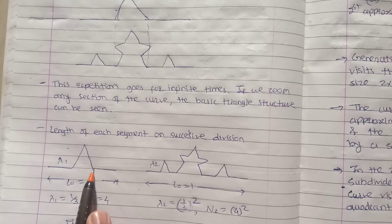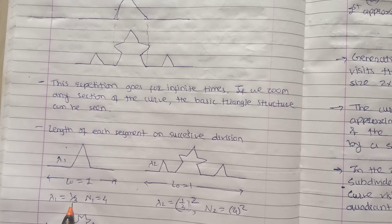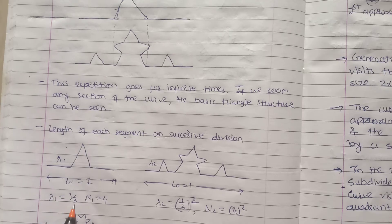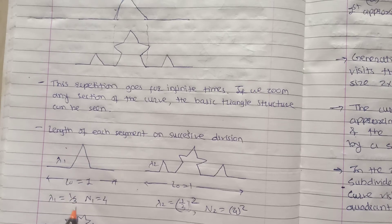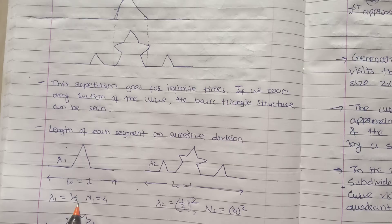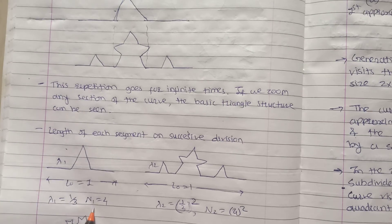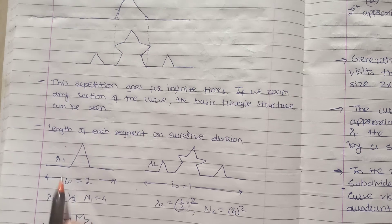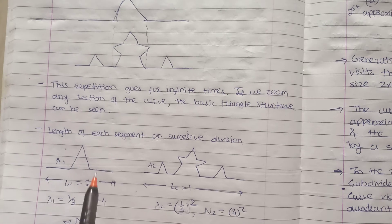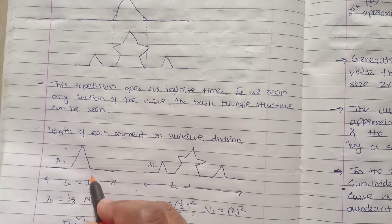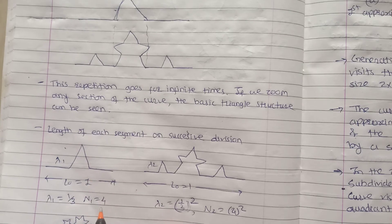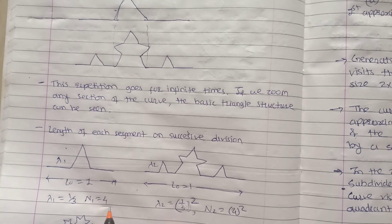Lambda 1 is equal to 1 by 3, because how many parts do we have to divide? Firstly, 1 by 3 part. And N1 is equal to 4. Means divide by 3 and convert to equilateral triangle.